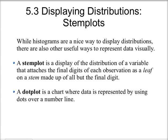In section 5.3, we're going to look at a couple more ways of displaying distributions. So far, we've looked at histograms, and we're going to look at a few more methods. The first one is called the stem plot, which displays a distribution of a variable by attaching the final digits of each observation as a leaf on a stem made up of all but the final digit. And also a dot plot, which is a chart where data is represented using dots over a number line.